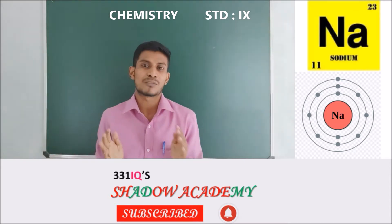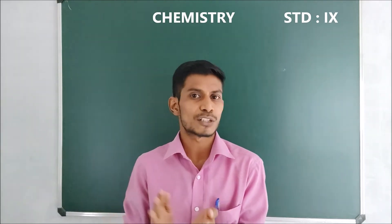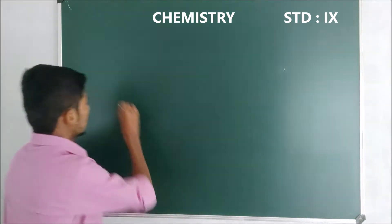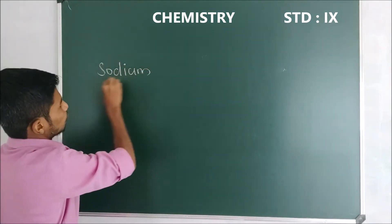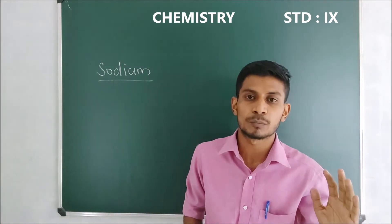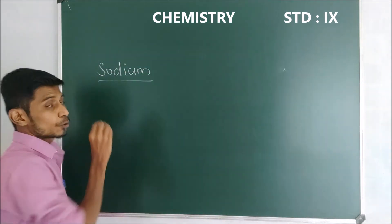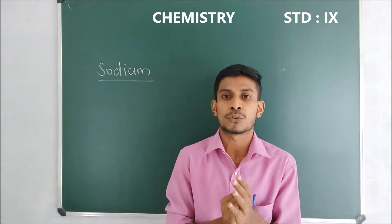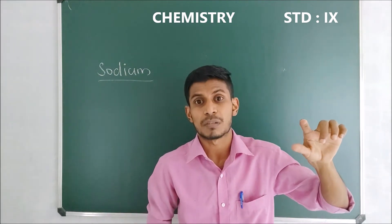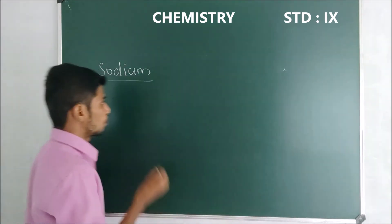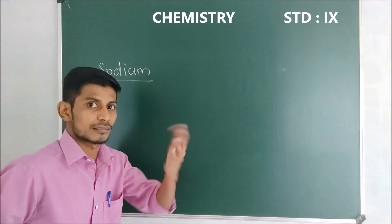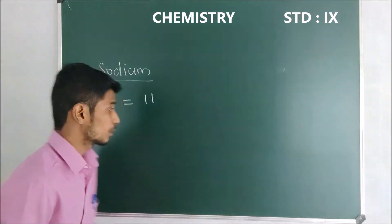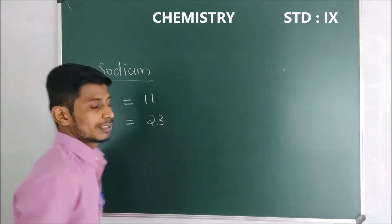OK, students. I hope you all have finished the work. Let me call Arjun. Tell me which atom was that? Very good — it was the sodium atom. Tell me, Arjun, what is the atomic number of sodium atom? Very good. We represent atomic number using the symbol Z. The atomic number of sodium atom is 11. And what about the mass number? Very good. The mass number of sodium atom is 23.